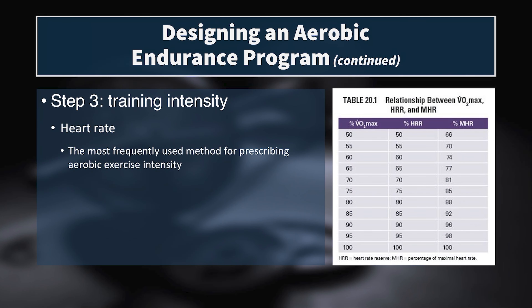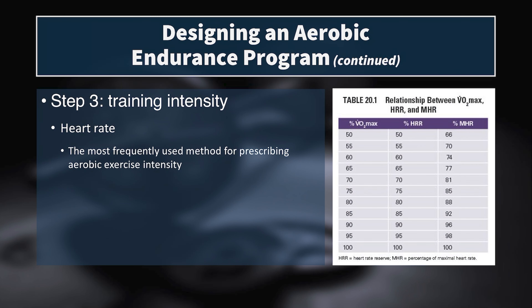One way to measure and prescribe endurance training intensity is through heart rate. It's used frequently in clinical programs, with general populations, team sport athletes, cyclists, and triathletes. We need to know the different heart rate zones and how to establish them for each individual. The NSCA highlights two primary methods: the Karvonen method using heart rate reserve, and the percent max heart rate method.